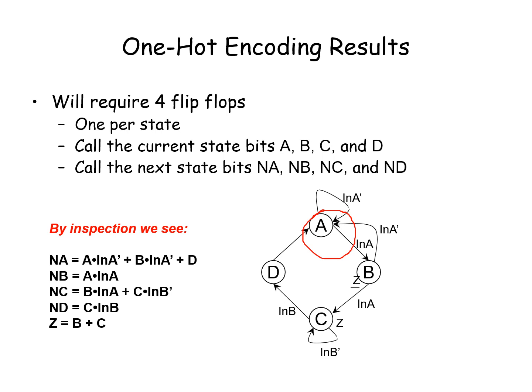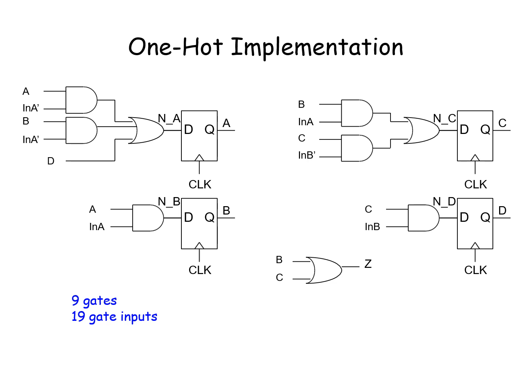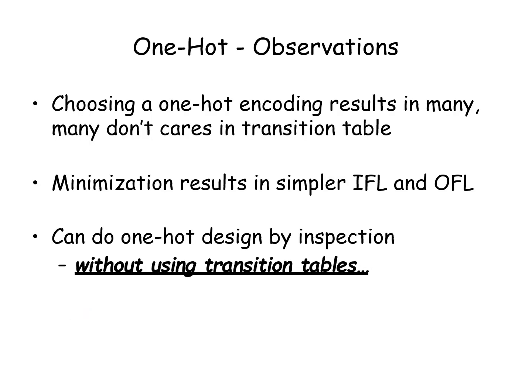That is, this is Z here is given. Here, Z is given. So, sum of these two, the result will be Z. Now, we are going to draw the logic diagram as per the expressions got it from the state diagram. So, this is one-hot implementation. The observations are choosing a one-hot encoding results in many, many don't-cares in transition table. Minimization results in simpler flip-flops. That is, input flip-flop and output flip-flop can do one-hot design by inspection without using the transition table. So, directly from this state diagram, we can provide.